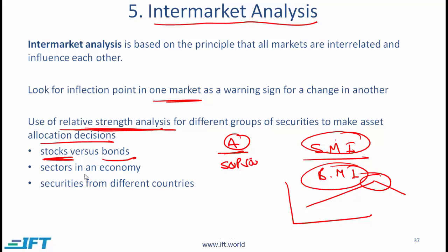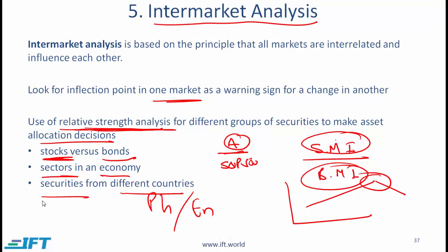We can use a similar analysis to consider the allocation of various sectors in an economy — for example, the pharma sector versus the energy sector. It can also be done for securities from different countries, such as the US index divided by the Indian index, to help decide what percentage of your portfolio to allocate to each.